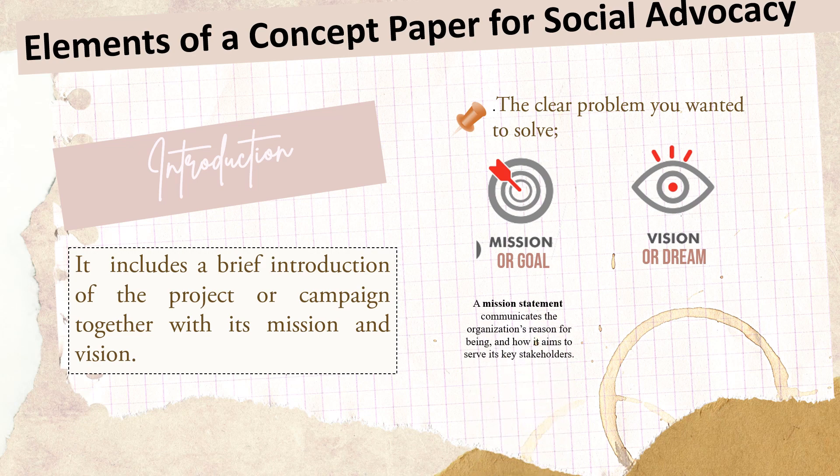A mission statement communicates the organization's reason for being and how it aims to serve its key stakeholders. A vision statement, in contrast, is a future-oriented declaration of the organization's purpose and aspiration. The mission statement should describe the overall goal of the project, while the vision statement should provide a long-term perspective of what the world would look like if the project is successful. By defining a clear mission and vision, the concept paper can help establish a sense of purpose and direction for the proposed social change initiative, attracting support and funding, as well as motivating stakeholders to work towards a common goal.